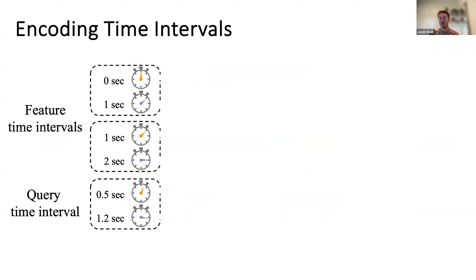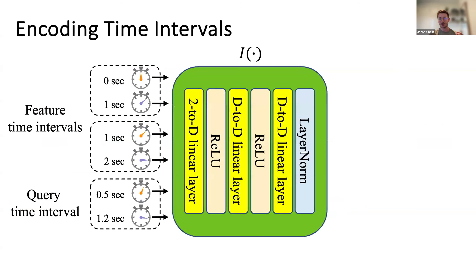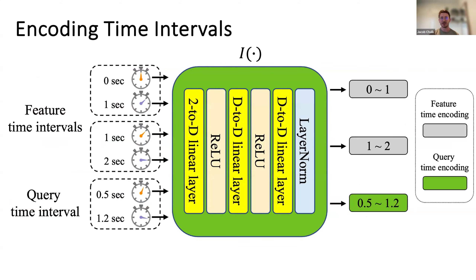Looking more specifically at how we encode these time intervals: we form a 2-dimensional vector based on start and end time, feed it through an MLP — a 2-to-D dimensional layer, then D-dimensional — repeated a few times, eventually outputting a D-dimensional vector encoding for that time interval. All time intervals go through simultaneously to give a notion of universal time, and it's important that the time intervals are relative to each other so the model understands what 0.5 to 1.2 seconds actually means within the input.